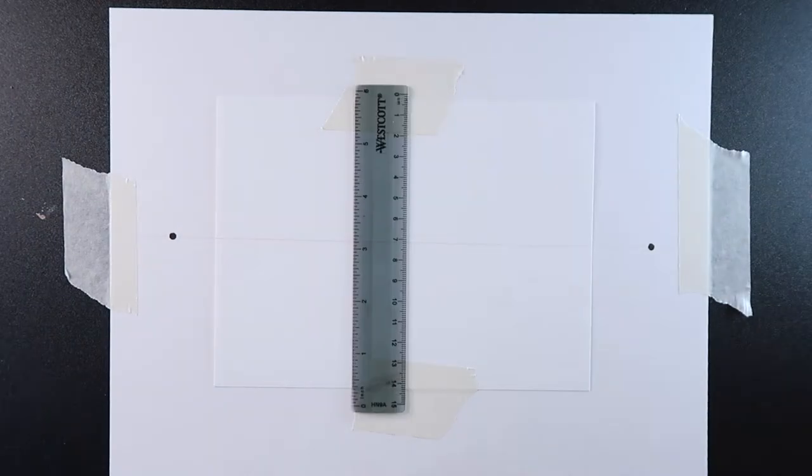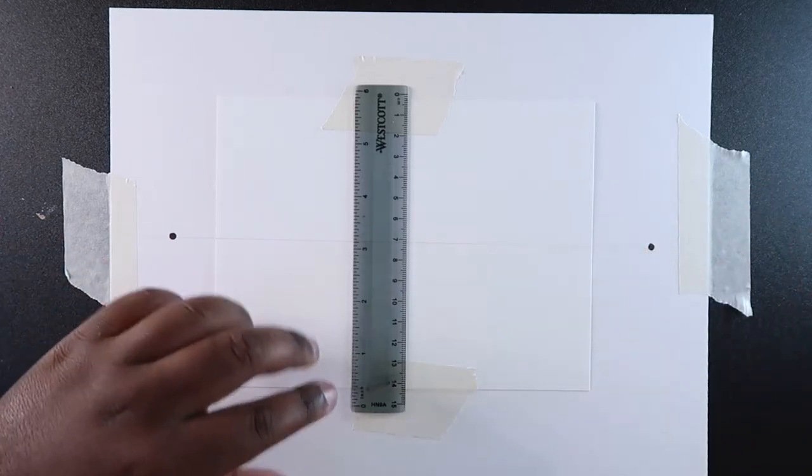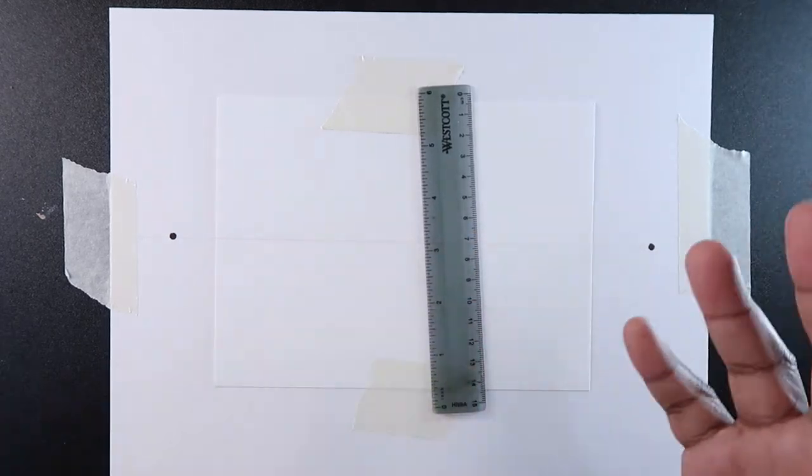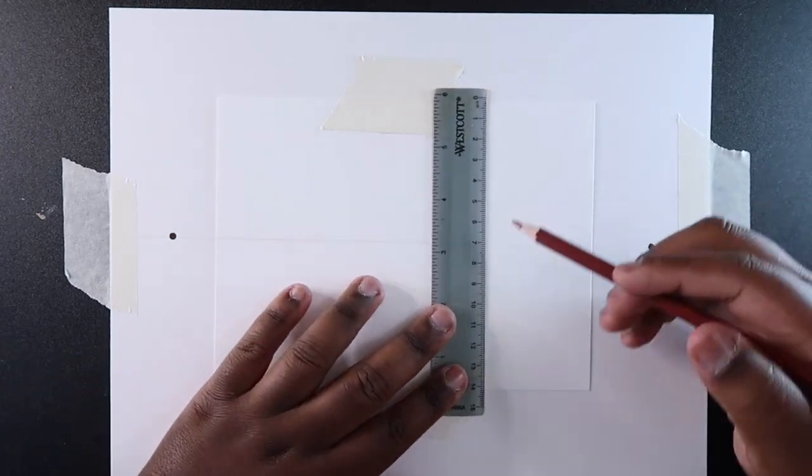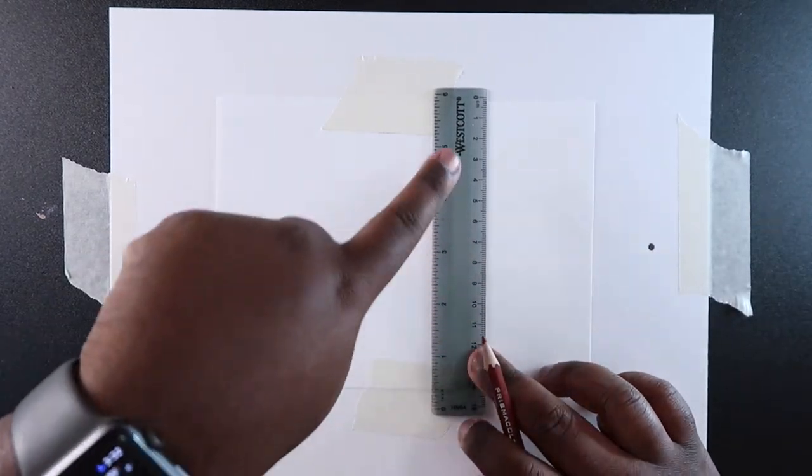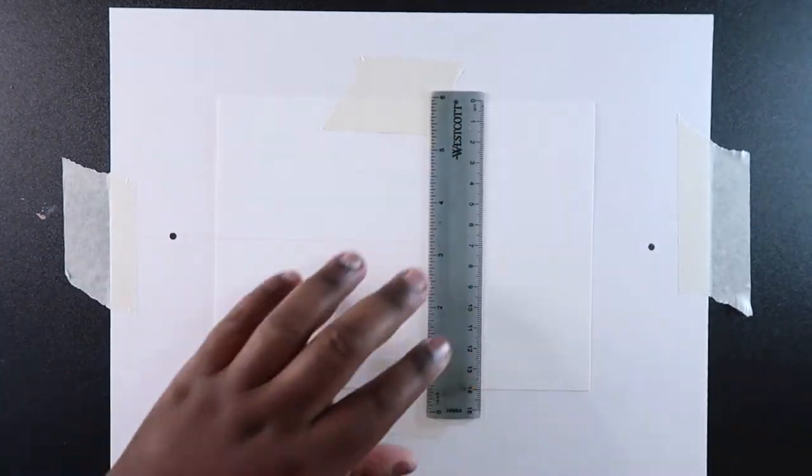Now we're going to take our smaller ruler and map out where I want the vertical line to be. You could have it in the middle or over here depending on what you're drawing. You could have buildings coming from here to this vanishing point and then the other part coming towards the other vanishing point.